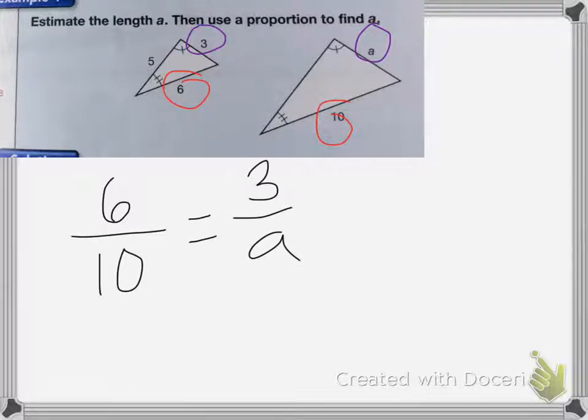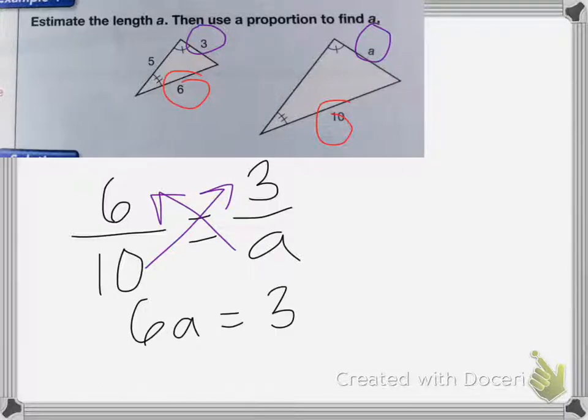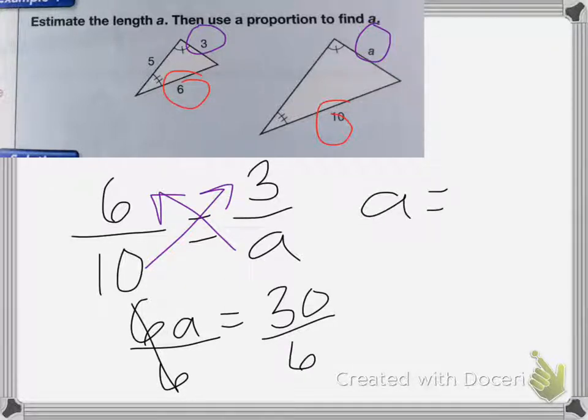Then we just do cross products and I end up with 6A equals 30. Divide both sides by 6 and A equals 30 divided by 6, which is equal to 5.